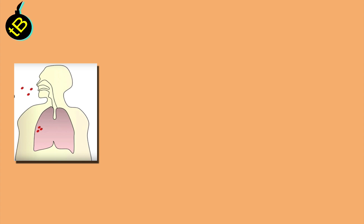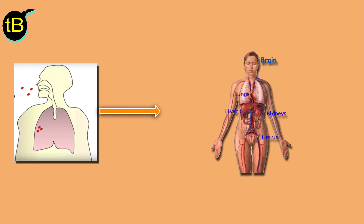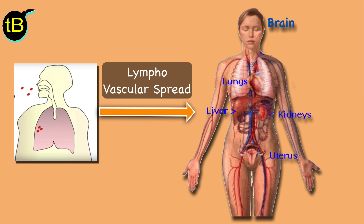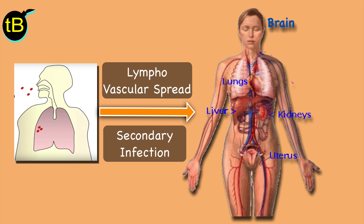In a small number of patients, the actively multiplying intracellular tuberculosis bacilli are released when the macrophages die. If alive, these bacilli may spread by way of lymphatic channels or through the bloodstream to more distant tissues and organs such as regional lymph nodes, apex of the lungs, kidneys, brain, bone, and of course the genital organs. This is called secondary infection.